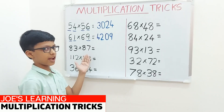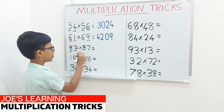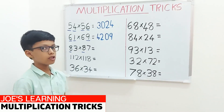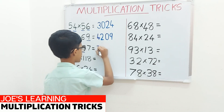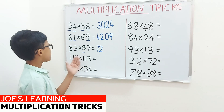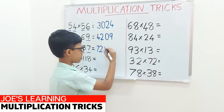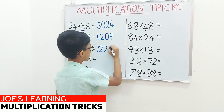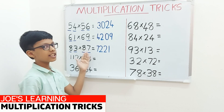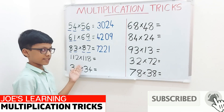Now let's move on to the example 83 multiplied by 87. First you have to look at the digits in the tens place, 8 and 8. So we have to multiply it with its next number. 8 multiplied by 9 equals 72. Write it down as the first two digits of our product. Now we have to multiply 3 and 7. So 3 multiplied by 7 is 21. Write it down as the next two digits of our product. The answer of 83 multiplied by 87 equals 7221.